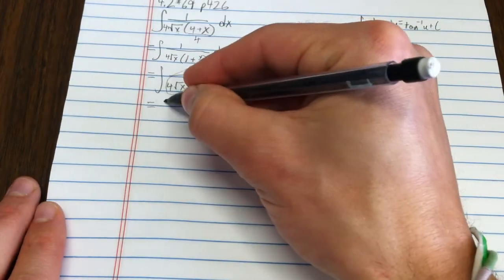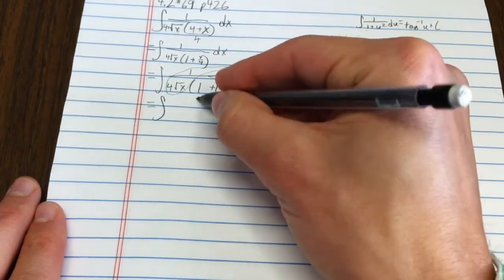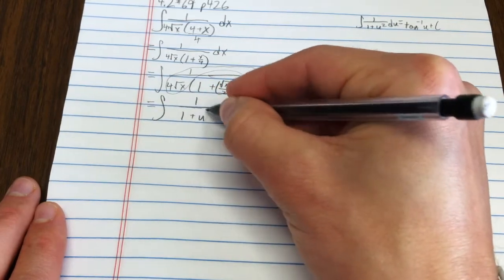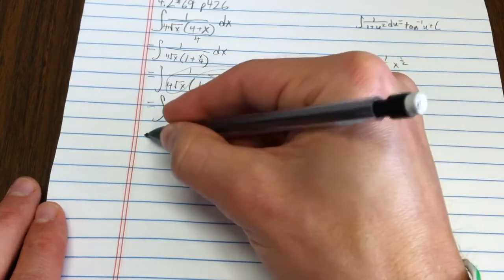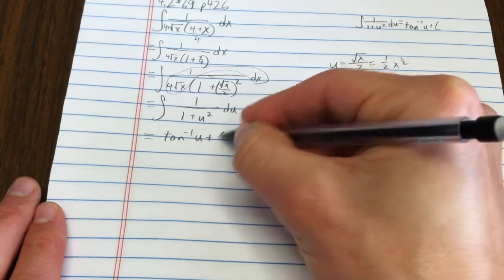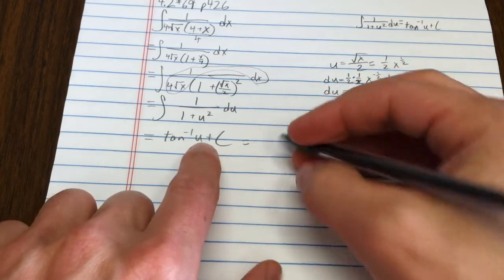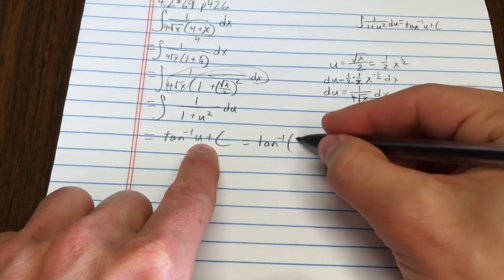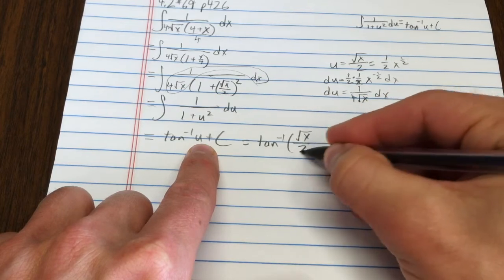So I get the integral of 1 over 1 plus u squared du, which is equal to arctan of u plus c, which we'll just sub in for u. Hey, that's how they're supposed to work for us.